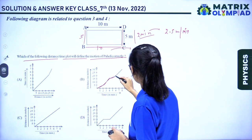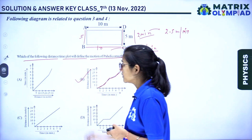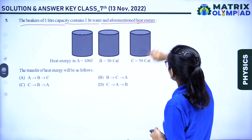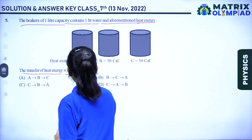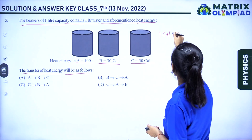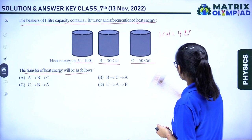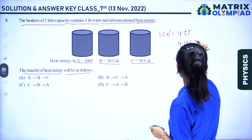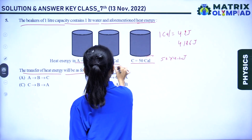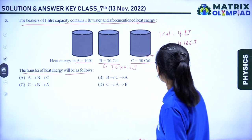Question number 5: a beaker contains heat energy values — A has 100 joules, B has 30 calories, and C has 50 calories. One calorie equals 4.2 joules. Converting: C has 50 × 4.2 joules and B has 30 × 4.2 joules. Heat energy transfers from higher to lower, so from C to B then B to A. The answer is option C.